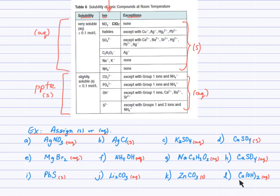Calcium hydroxide: hydroxides are usually precipitates, except — calcium is listed as an exception. Therefore calcium hydroxide is aqueous.